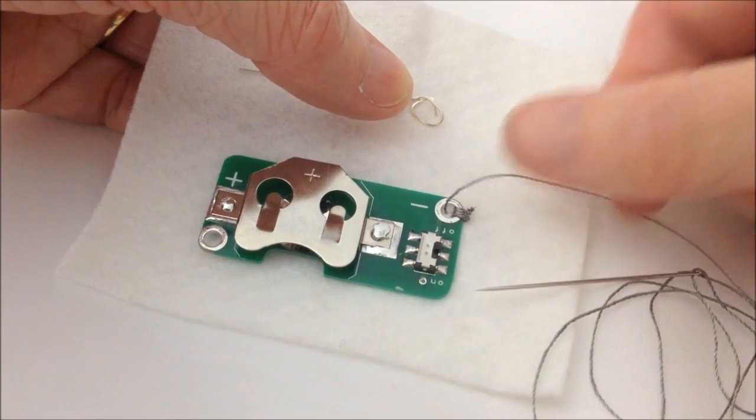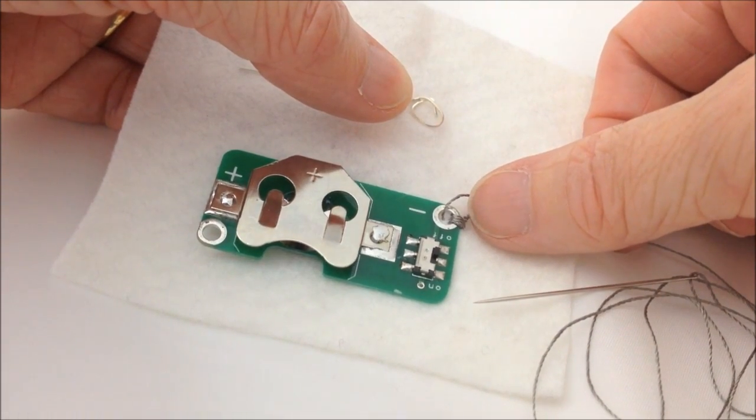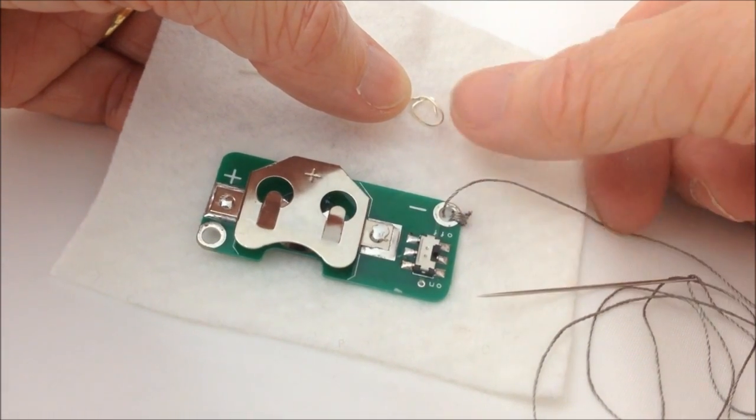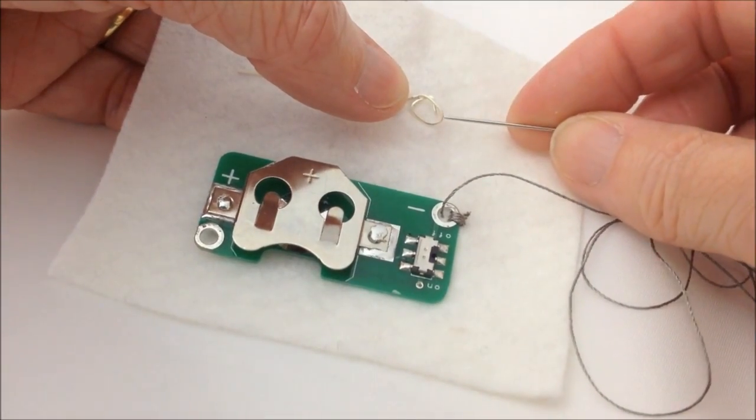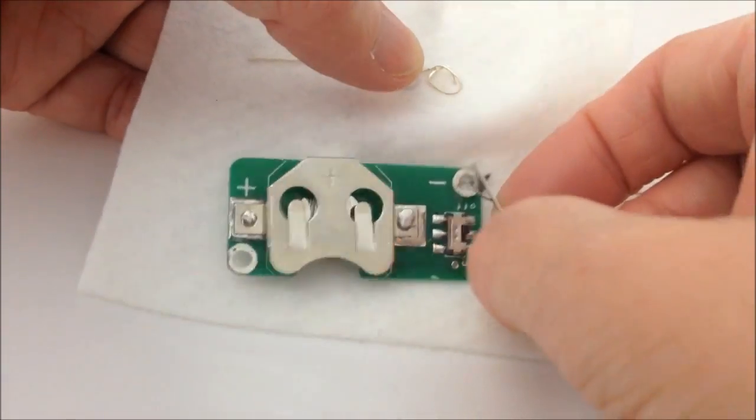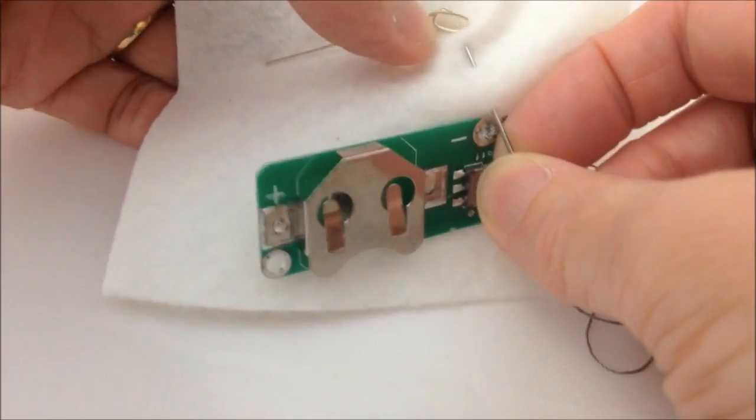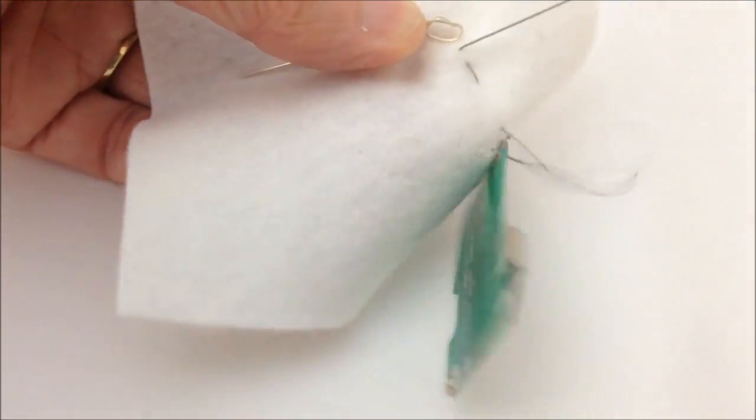What I'm going to do now is stitch with my conductive thread from my ring just here up to the loop that I've made on the LED leg. I'm just going to do some small running stitches just to get to the point where I want my LED to sit.